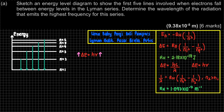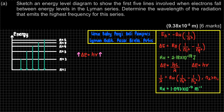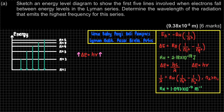We have 5 delta E values. The highest difference, the biggest delta E, is when N equal to 6 falls to N equal to 1 — this transition releases the most energy. For example, comparing N=2 falling to N=1, that's a very small value, but the highest in this case is when N equal to 6 falls to N equal to 1.